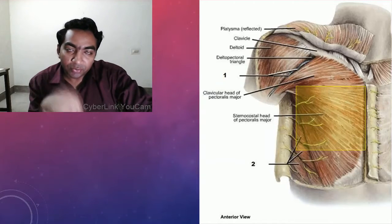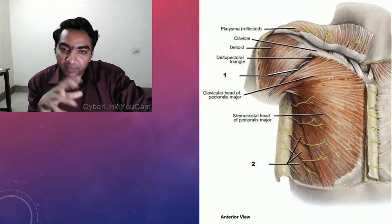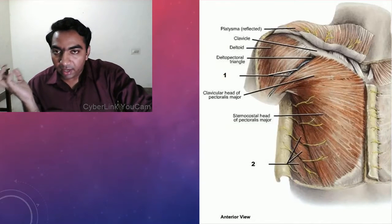The breast lies between the second to sixth intercostal space. When we look at a breast clinically, we should assess the nipple-areolar complex, the shape of the breast, the position, and the symmetry. But when a surgeon sees a breast, he or she will not only assess the external anatomy but will also have a view into the internal anatomy.